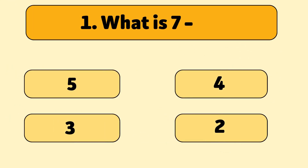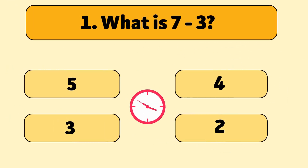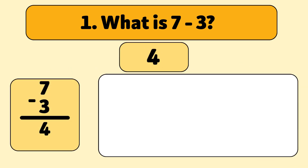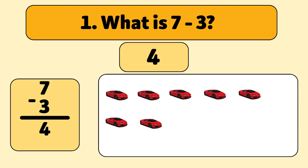What is seven minus three? The answer is four. We start with seven cars and take away three. Let's count: one, two, three. You're doing amazing.